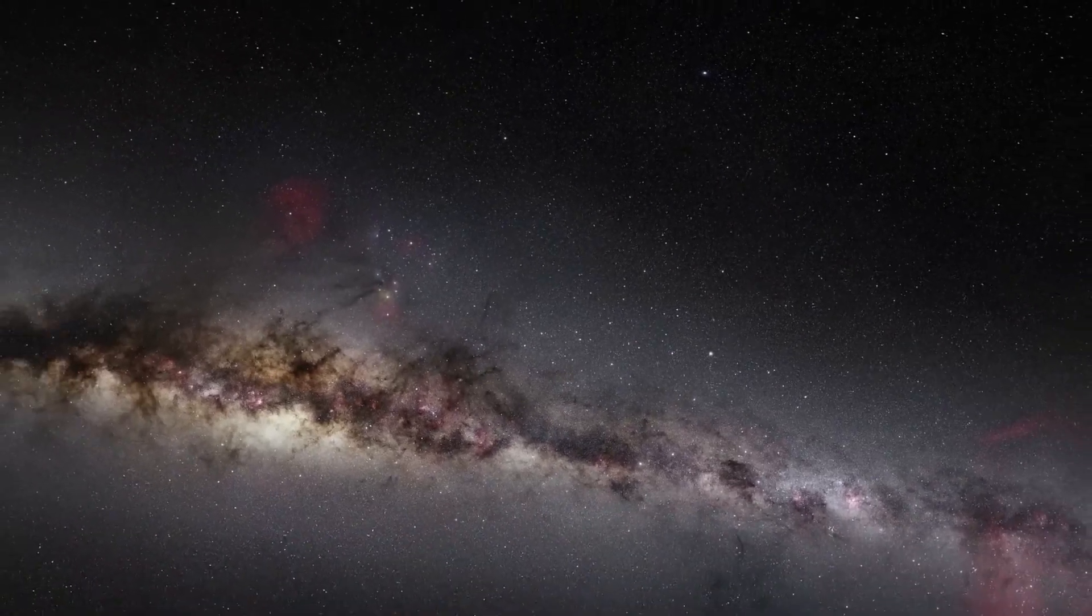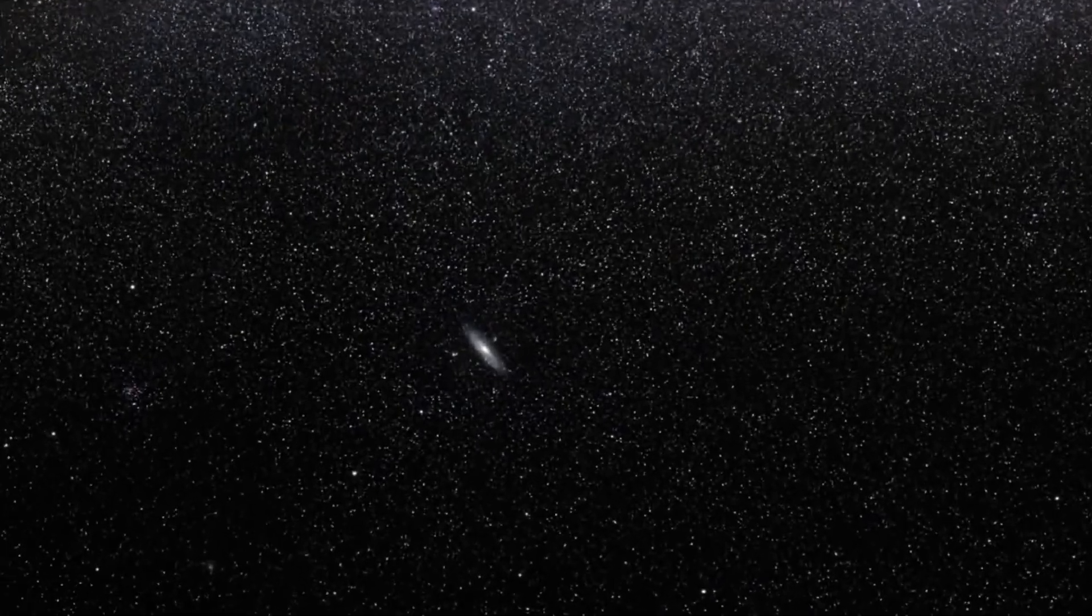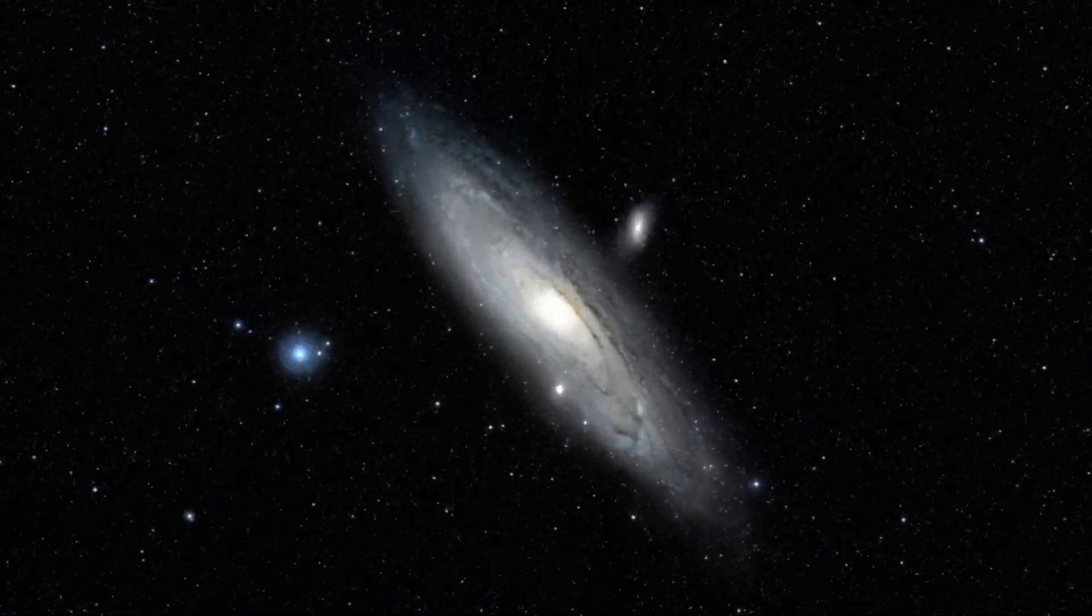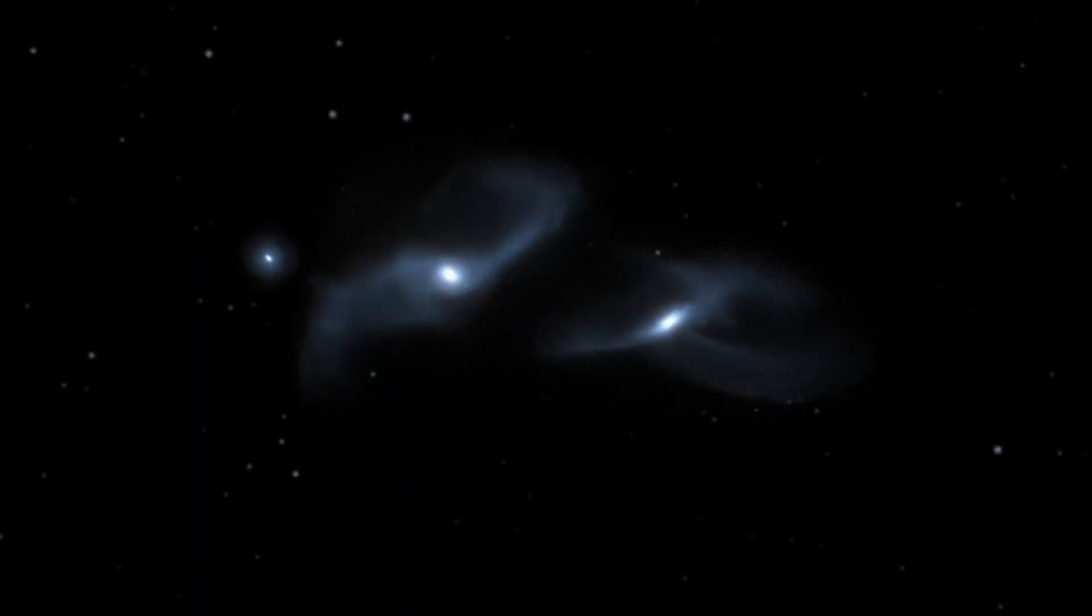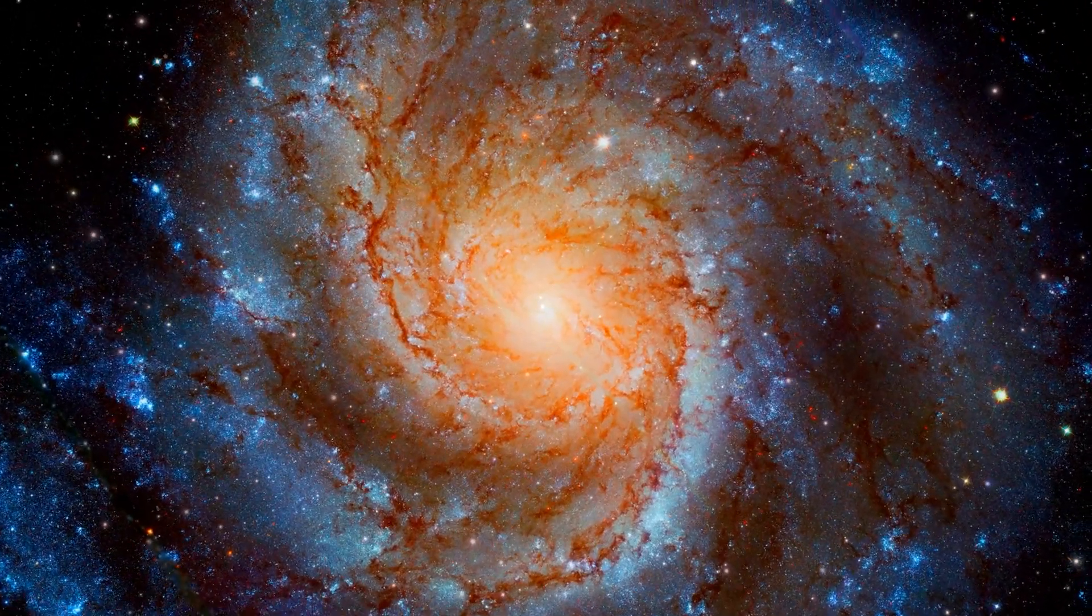Before exploring the new shocking discovery that a team of private astronomers found, it's important to explain what Andromeda is. The Andromeda galaxy, officially known as Messier 31, is the closest neighboring galaxy to our Milky Way.